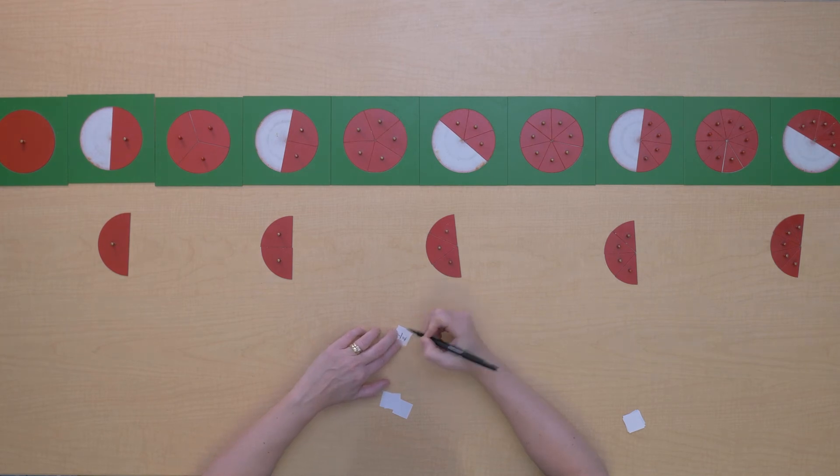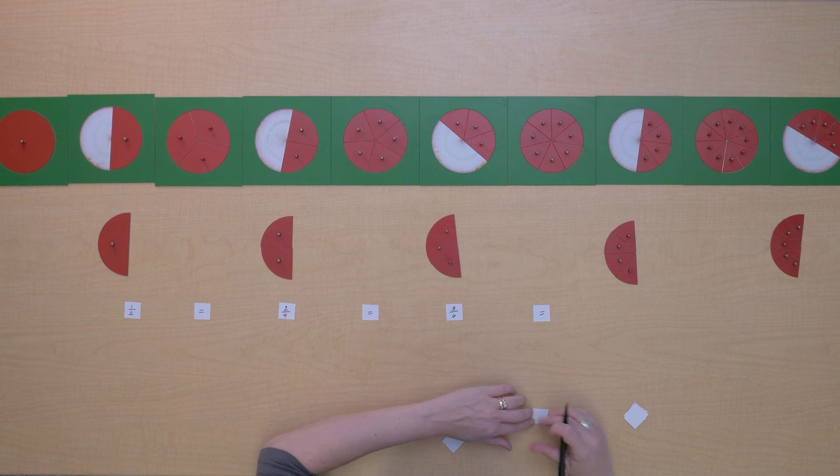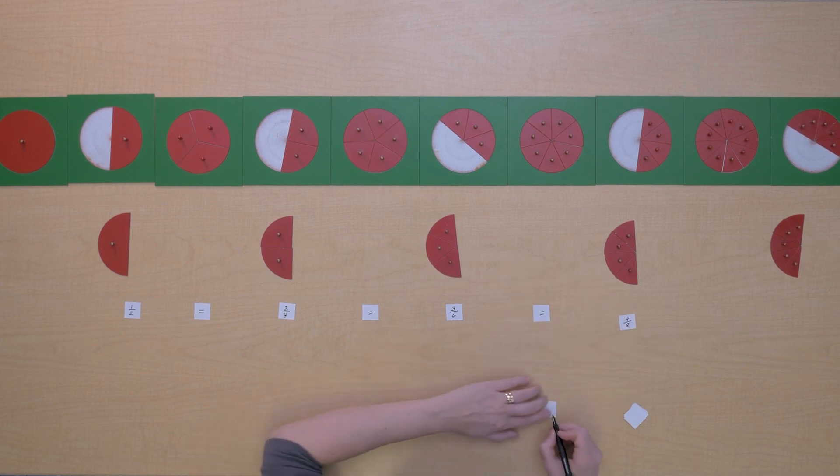One half equals two fourths, which equals three sixths, which equals four eighths, which equals five tenths.